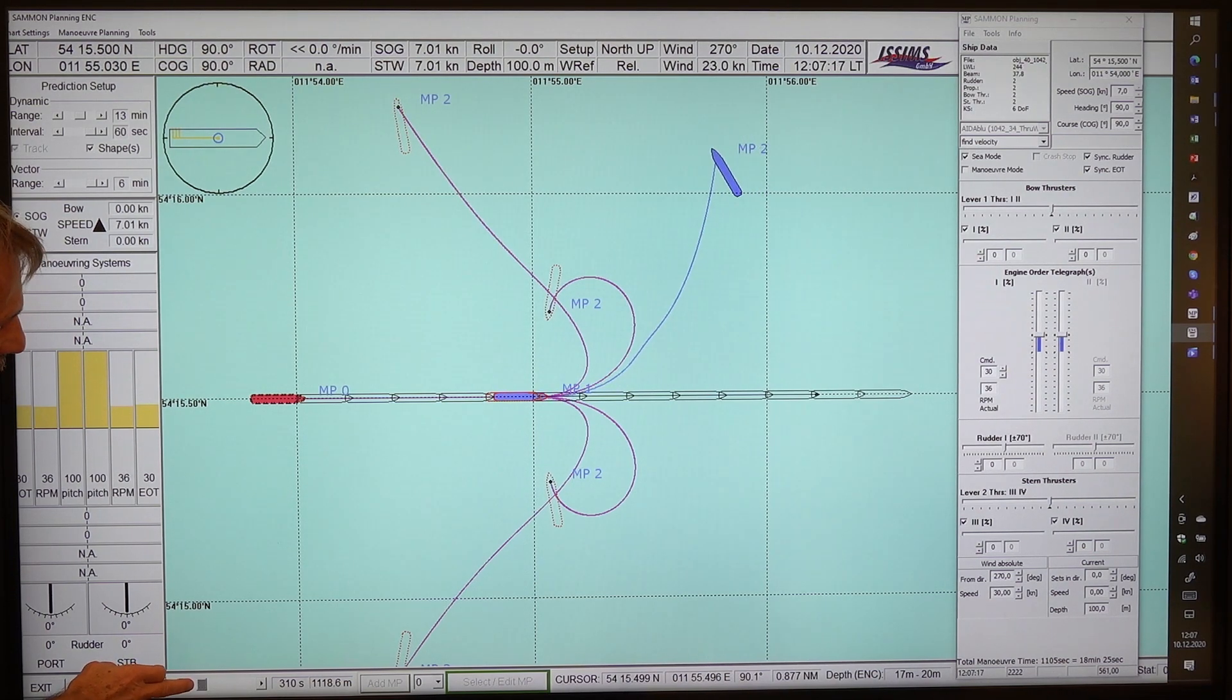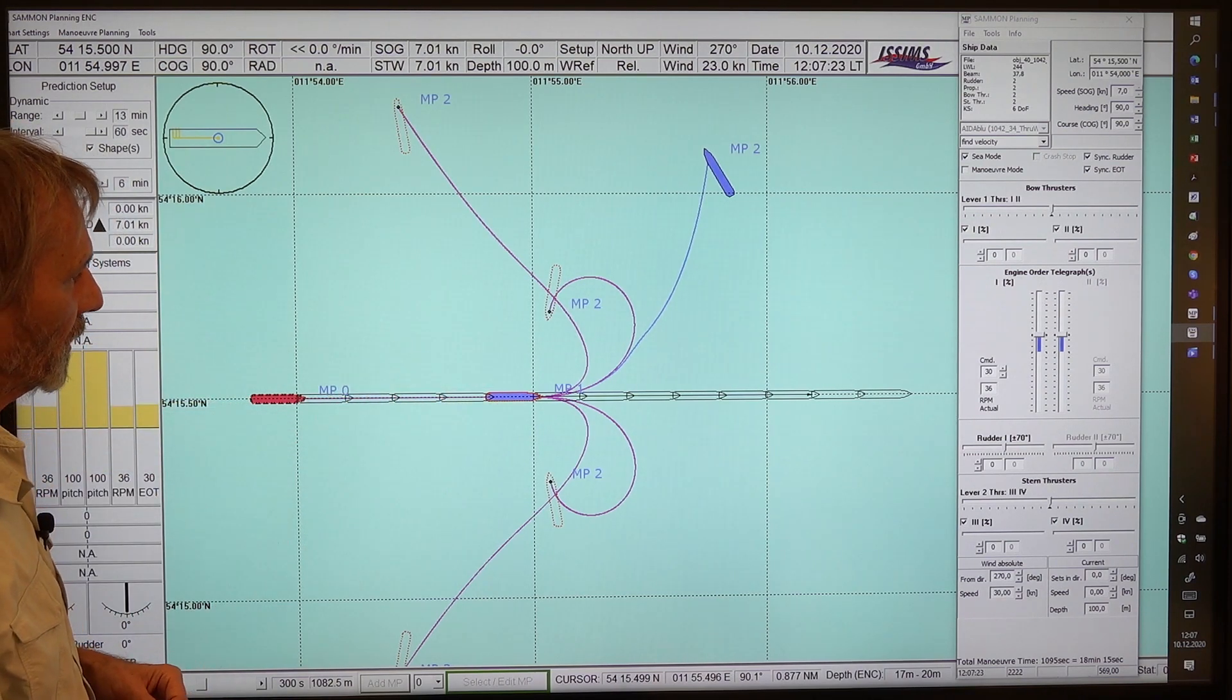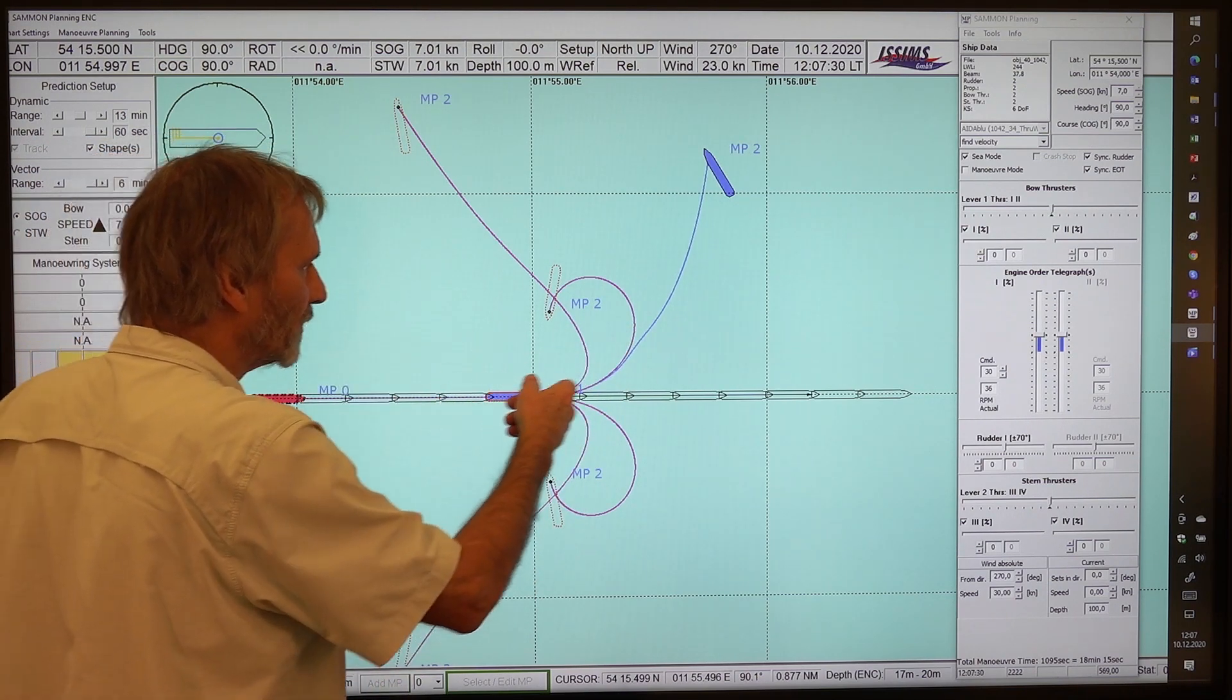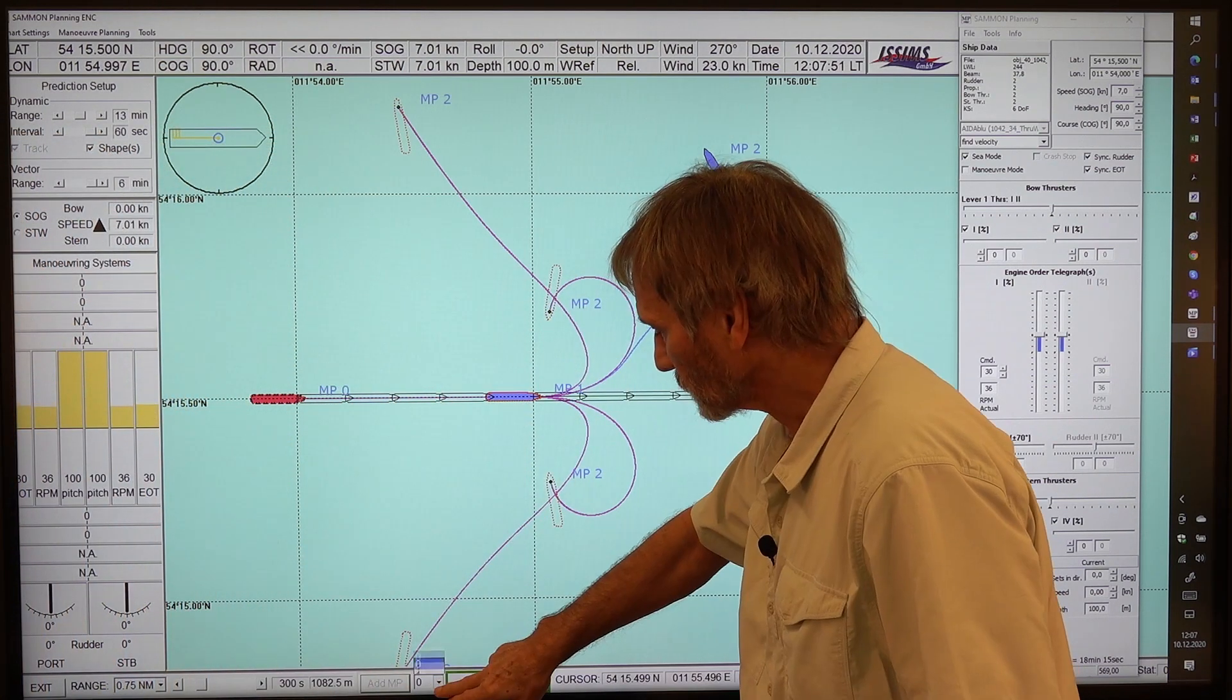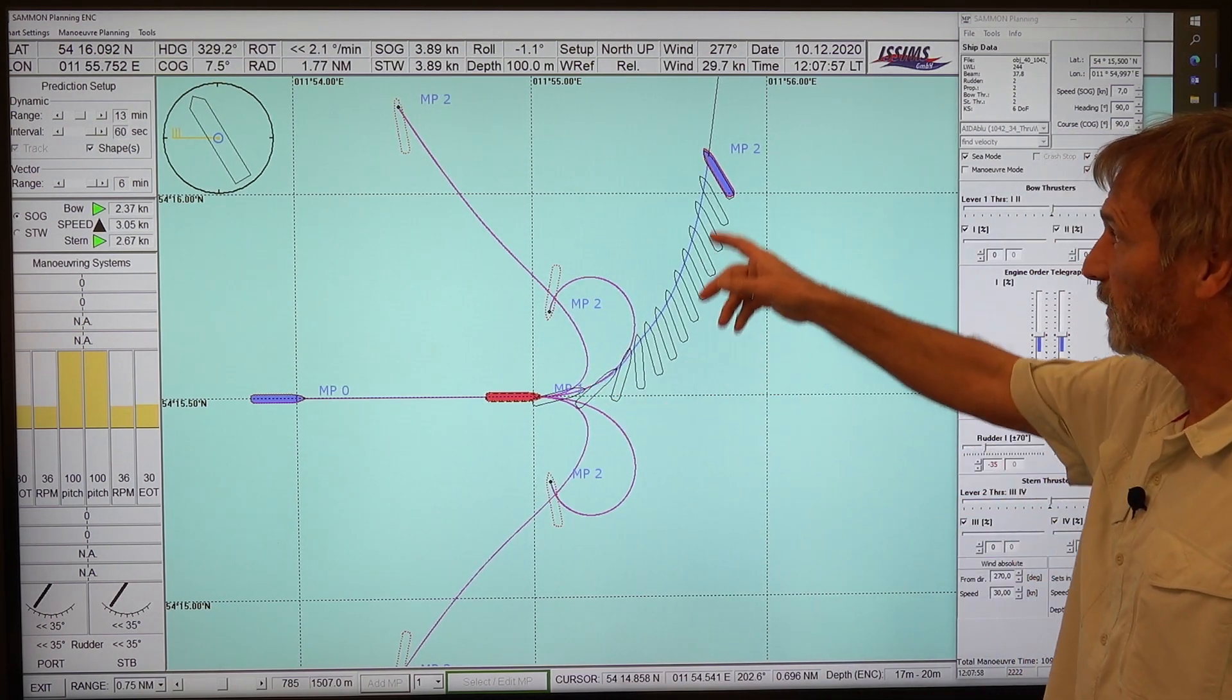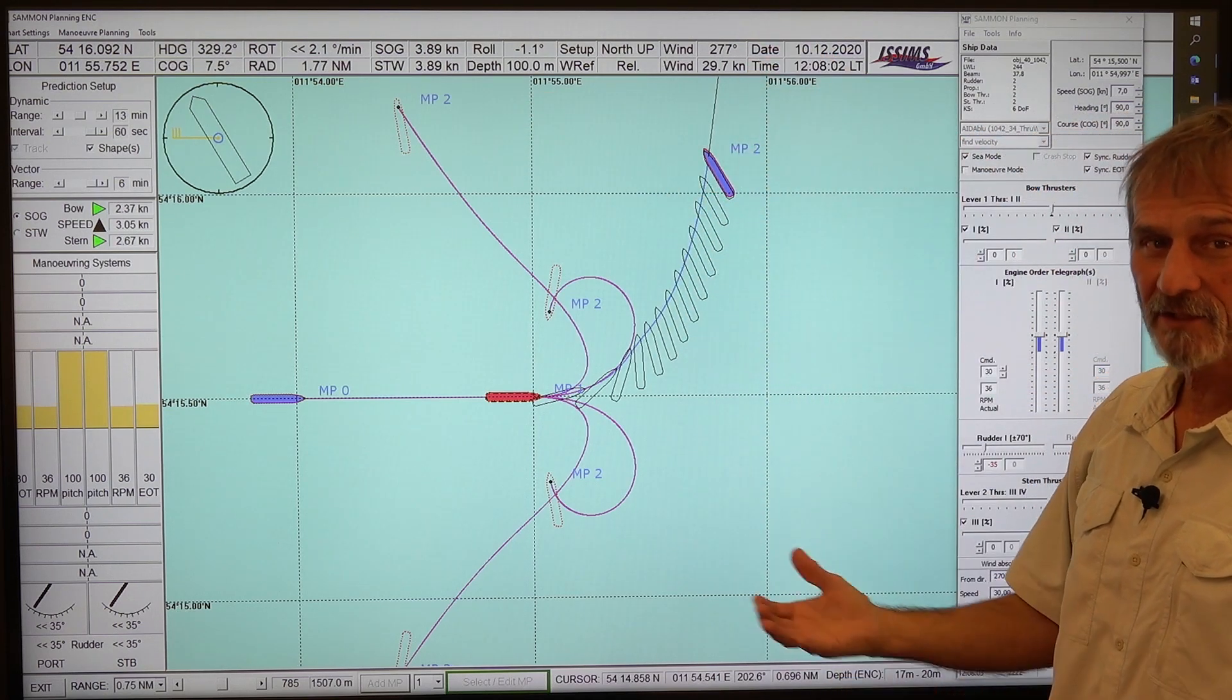So this would be our position here. So this is the same position as we had before to compare the turning circle. This was our position where we initiate the turning. So what we clearly see, okay, the ship would have, due to the wind pressure from the aft, the ship would go a little bit further up. So this would be the situation that the ship cannot really be turned because this is already an equilibrium condition, the balance.